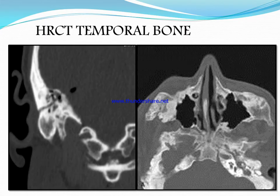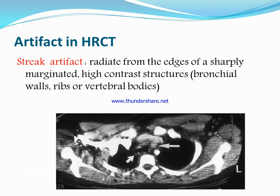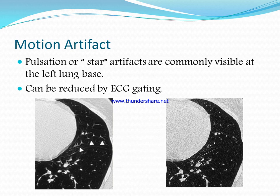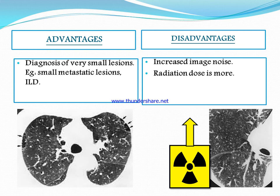Regarding CT images of HRCT temporal bone and artifacts: common artifacts include streak artifacts, which radiate from edges of sharply marginated high-contrast structures like bronchial walls, ribs, or vertebral bodies. Second are motion artifacts due to patient movement, and star artifacts are commonly visible. These artifacts are most commonly seen in HRCT thorax.